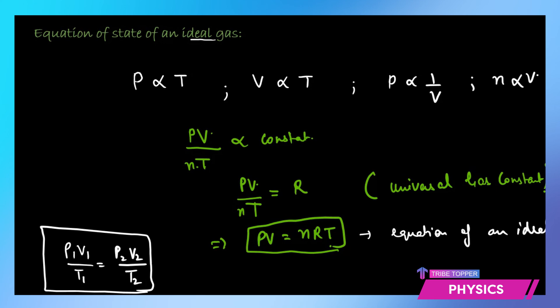The equation p1·v1/t1 = p2·v2/t2 is generally used to solve mathematical problems. However, if pressure, volume, and temperature are given along with the known value of R, you can use PV = nRT to find the number of moles or particles directly. That's all for this video session on gas laws. In the next session we will discuss problems based on these gas laws. Thank you for watching.